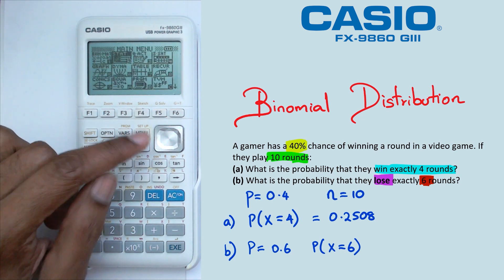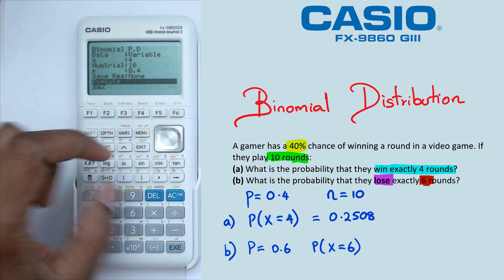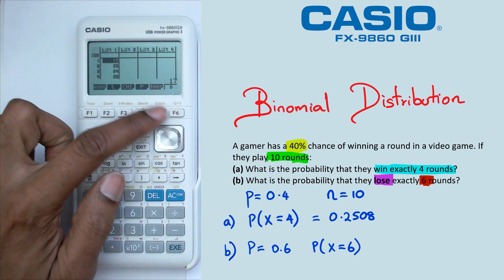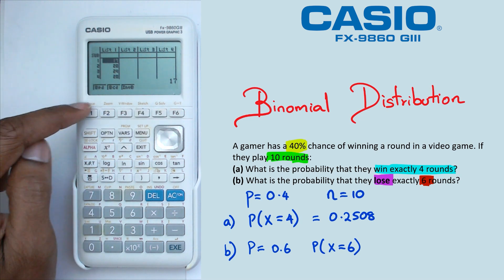So we're going to go back into, I'll do this again, main menu, go into stat mode, click on distribution, which is F5, click on binomial, which is F5. And we're going to go to BPD.